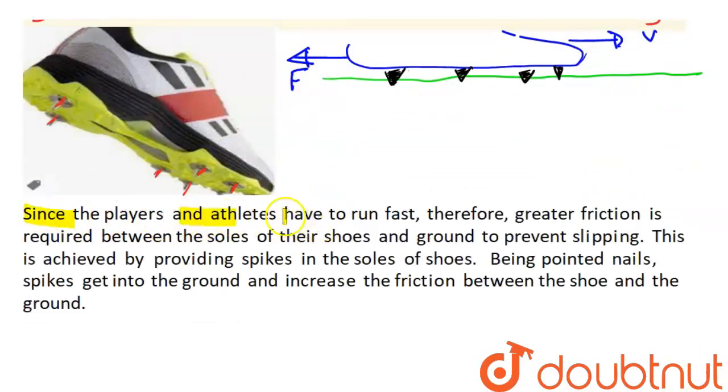Since the players and athletes have to run fast, friction is needed between the shoes and ground. Because if we are wearing shoes without spikes, then our friction cannot act as much.